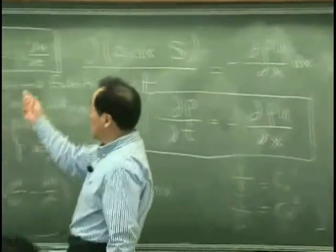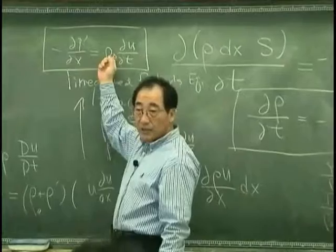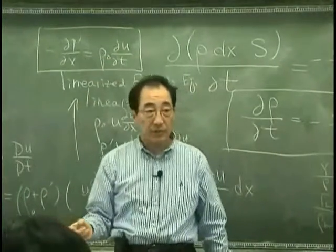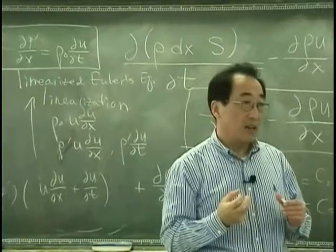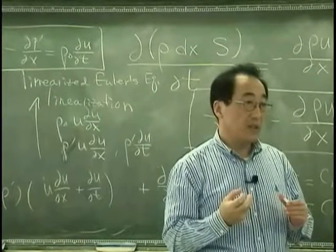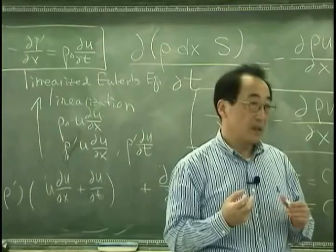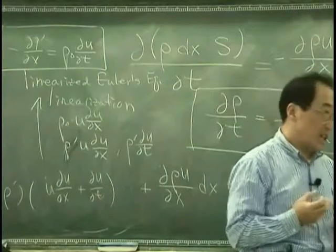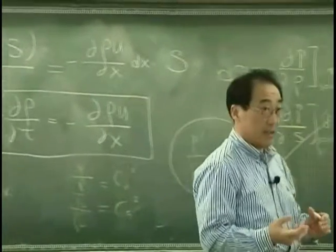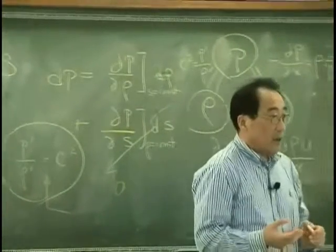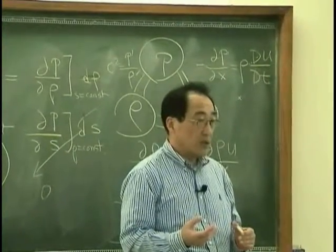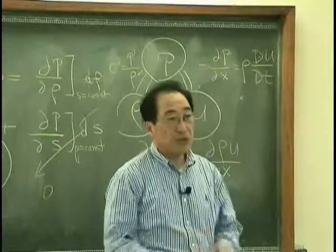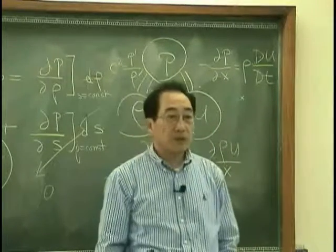So the force difference accelerates material rho zero. rho zero is the density of the fluid that has a unit volume. And du/dt is the acceleration. That is ma. So linearized Euler's equation is just the expression of Newton's second law on the compressible fluid.